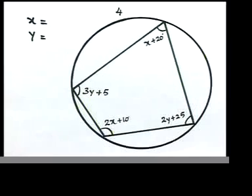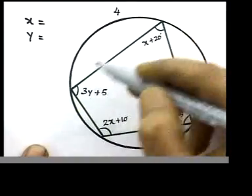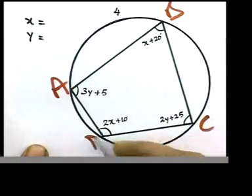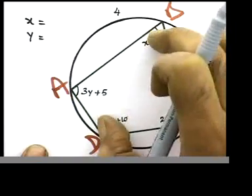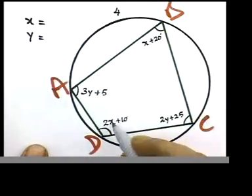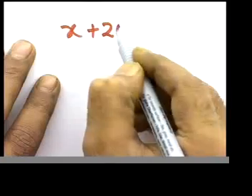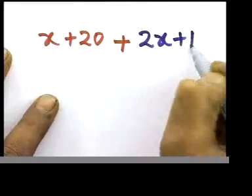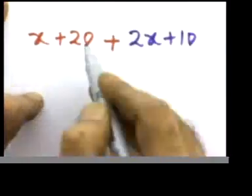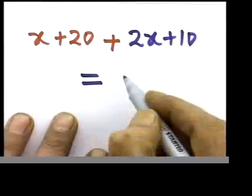Question four is getting a bit harder. The concept is the same — call the vertices A, B, C, D. Opposite angles add up to 180, so add those two and equate to 180. We have x plus 20 and 2x plus 10 as the opposite angles. So: x plus 20 plus 2x plus 10 equals 180.